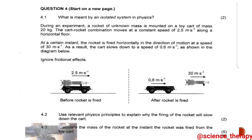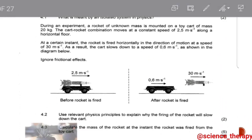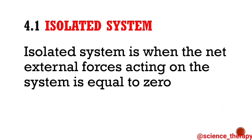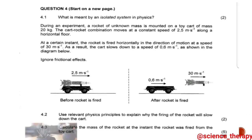Question 4.1 asks: what is meant by an isolated system in physics? An isolated system is one where the net external forces acting on the system is equal to zero.